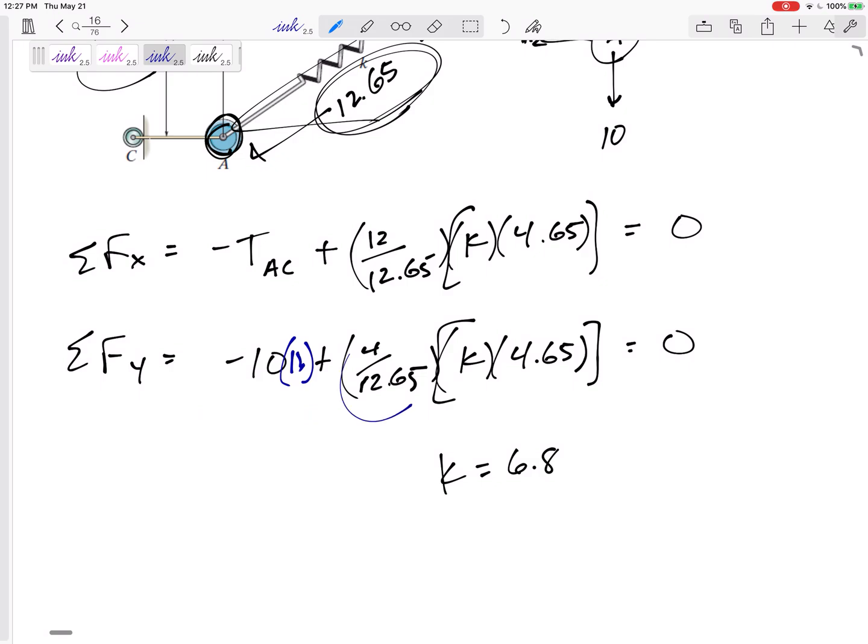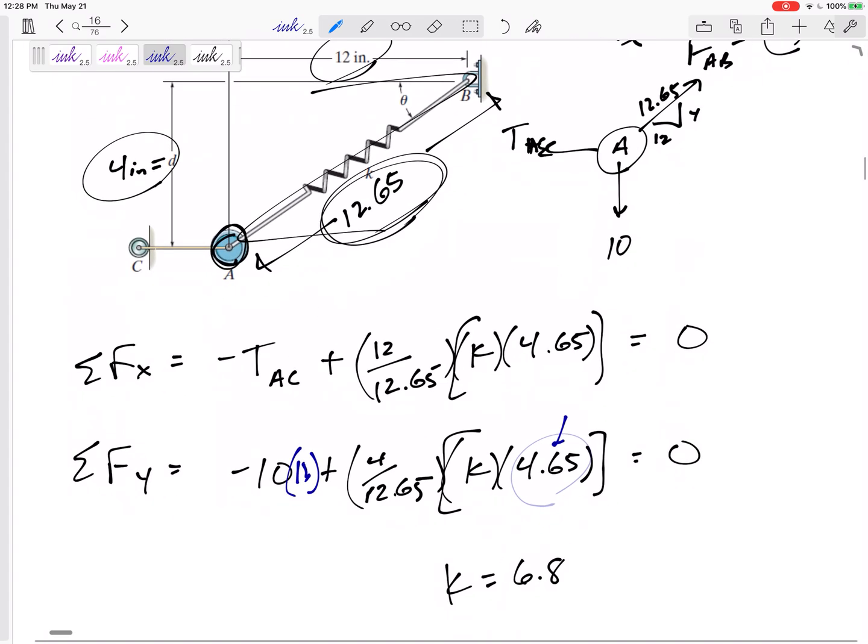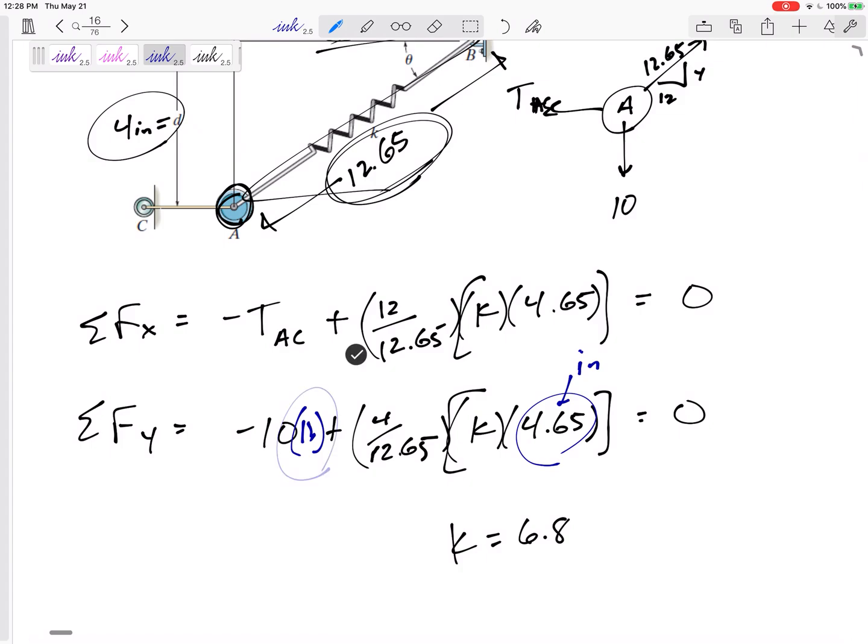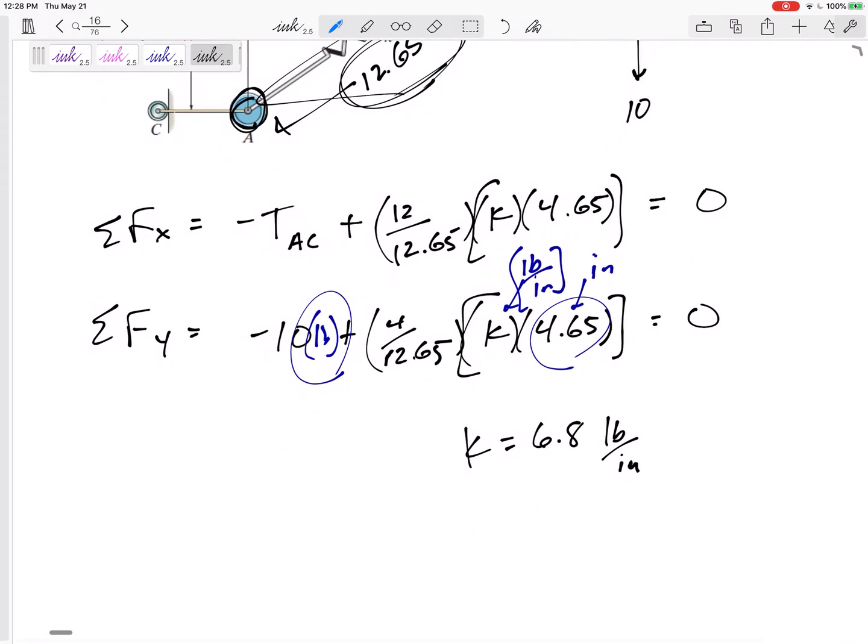So this 4 over 12.65, that's just a ratio. It's inches over inches. It's unitless right there. This is in inches. So if I want to end up with units of pounds, then this K value would have to be pounds per inch, right there. So this is pounds per inch. A K value is the amount of force per stretch.